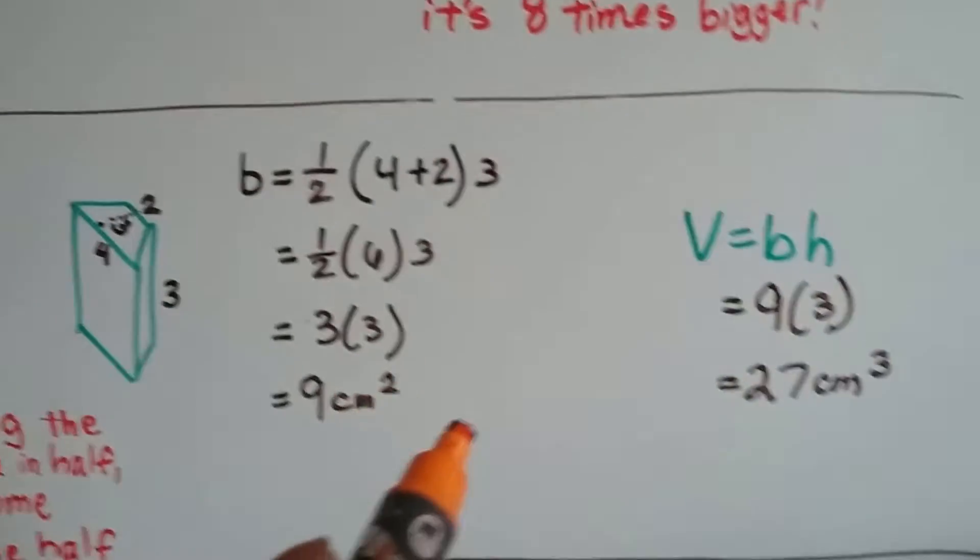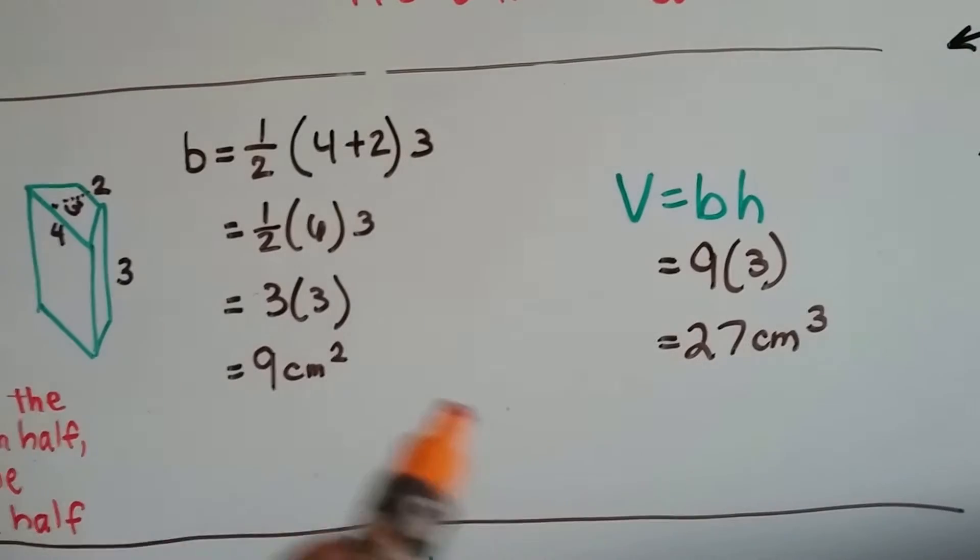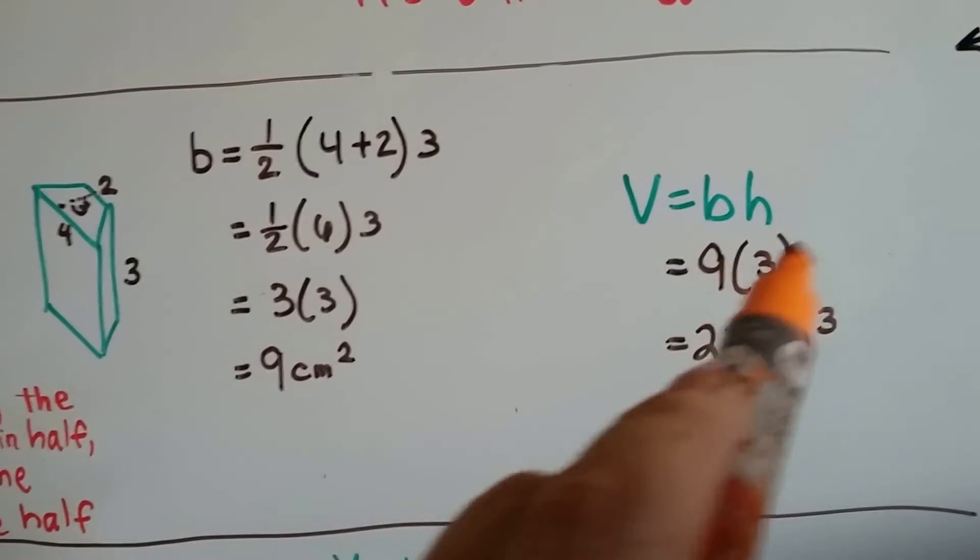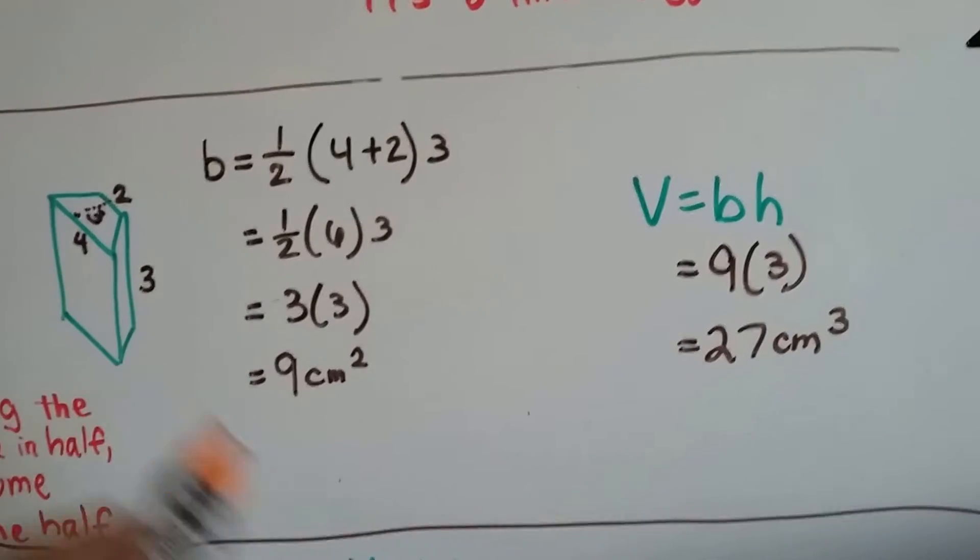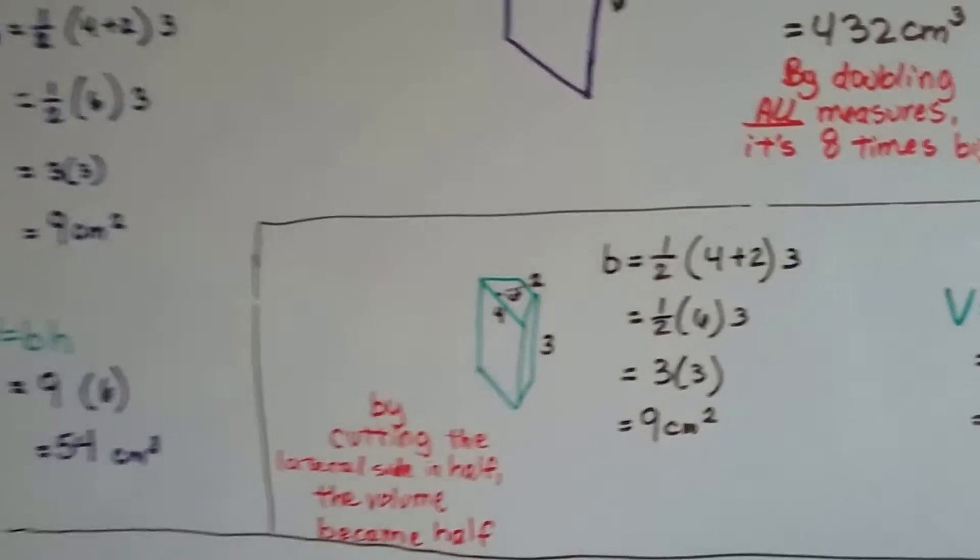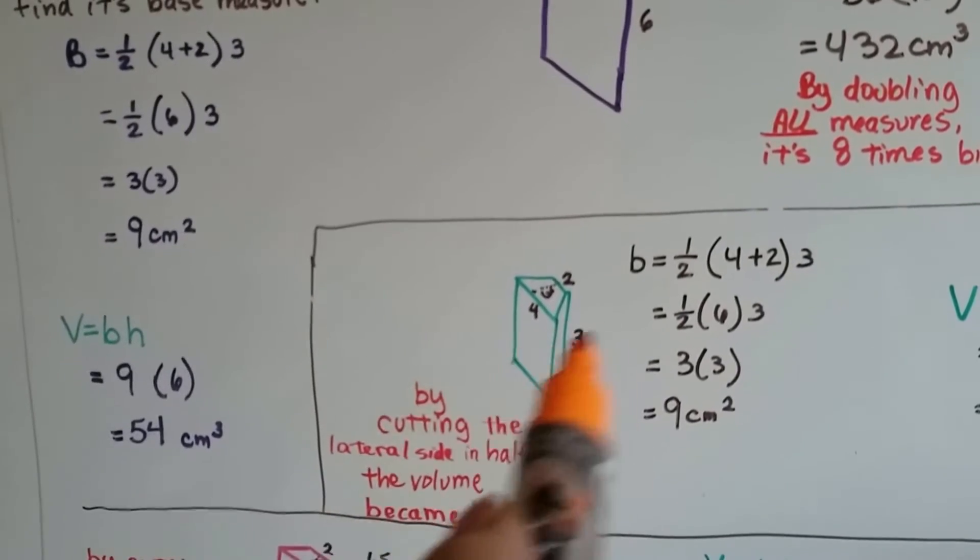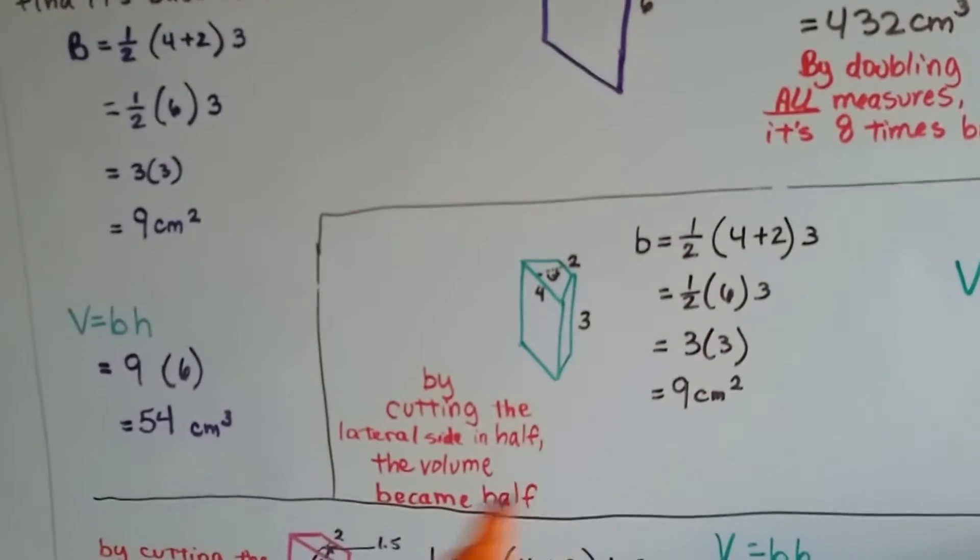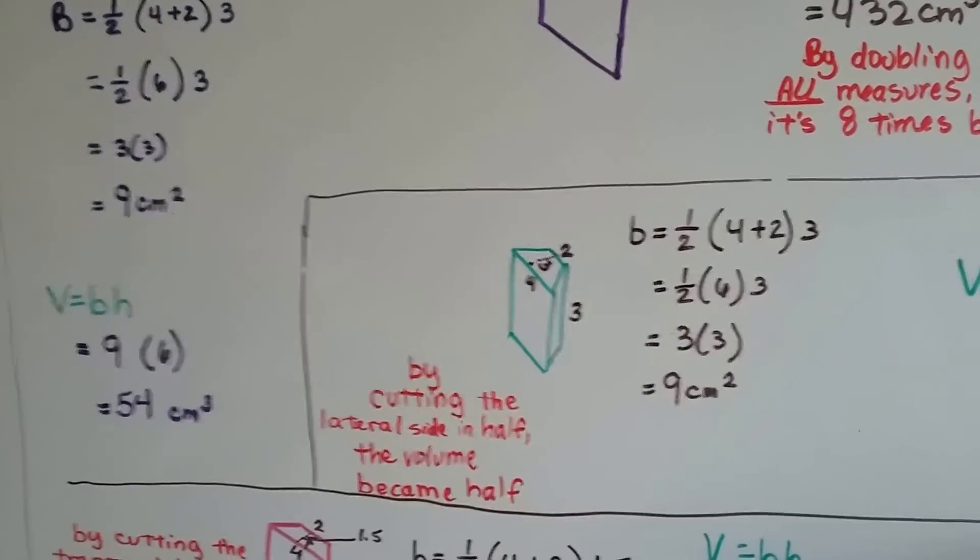But now it's going to change, because now we're going to do the base times the height. And the base is 9, and now the height for the lateral side is 3. It's 27 centimeters cubed. So, by cutting the lateral side in half here, instead of a 6 it's a 3, the volume cut in half. Well that makes sense, doesn't it?